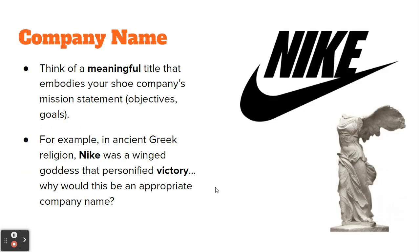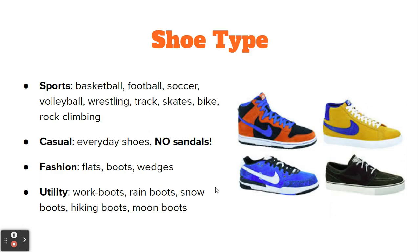First, company name. The company name should be a meaningful title that embodies your shoe or your actual company. For example, did you know Nike is actually the wing goddess that personifies victory? So think about that — if you are a footwear company creating shoes designed for performance, having a logo that literally means to win is a very significant meaning. So try not to just write your name on the shoes; try to think of something clever.